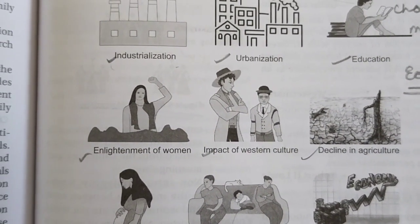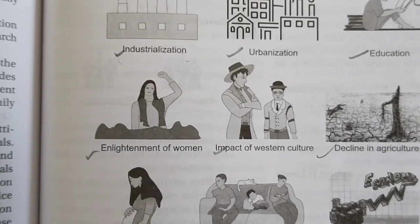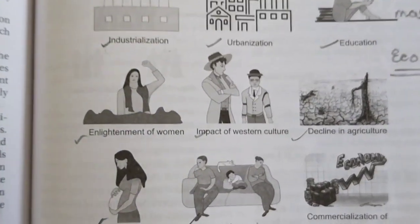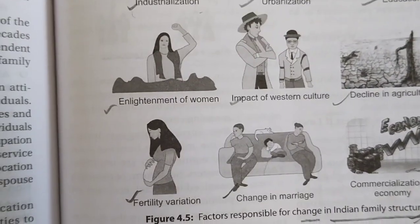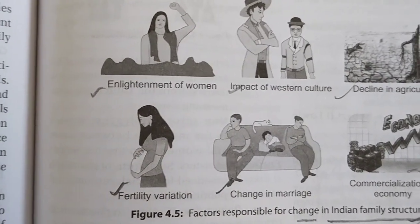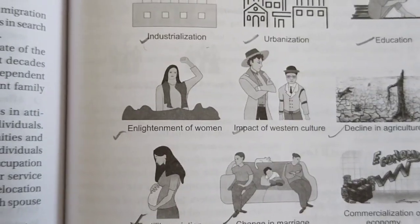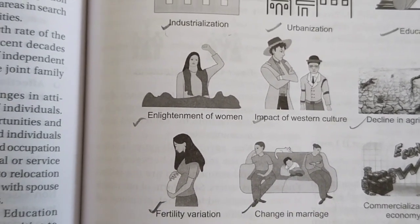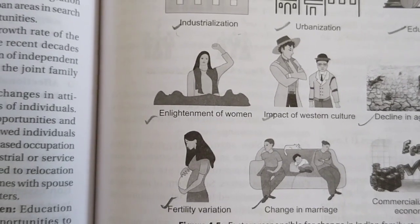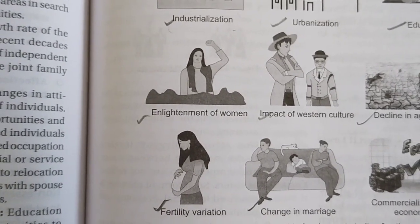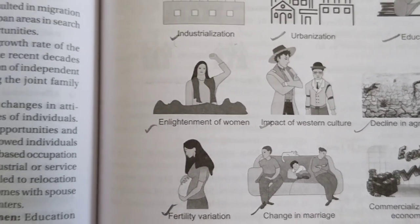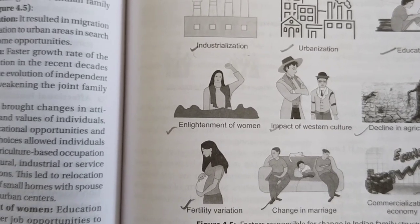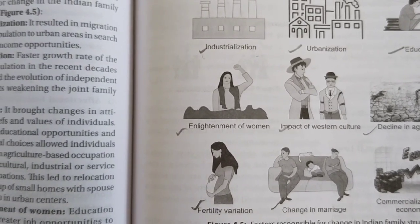Changes in marriage patterns include never-married young adults, which results in a reduction in family size. Age at marriage matters — if individuals are immature, both male and female, they may have unstable marriages. People have also been studying polyandry, polygyny, and intercaste and child marriage as part of changing marriage trends. Commercialization of the economy is another factor influencing the evolution of the family system.